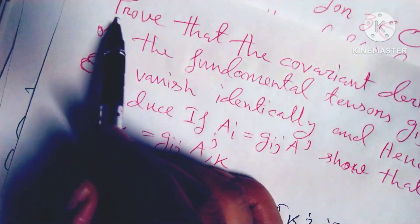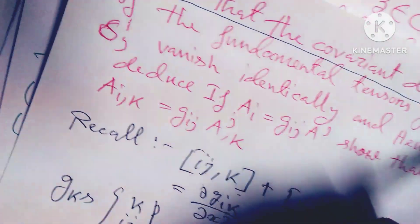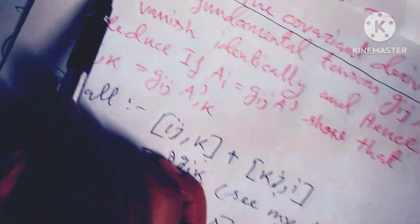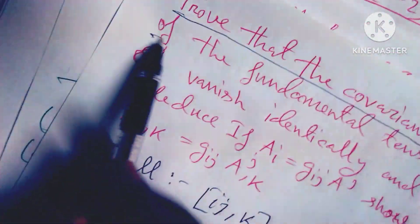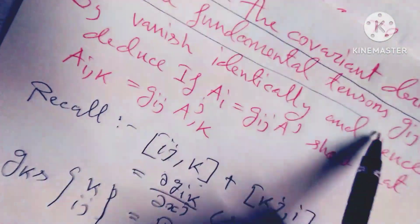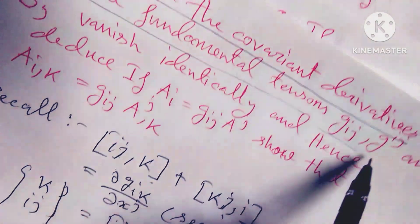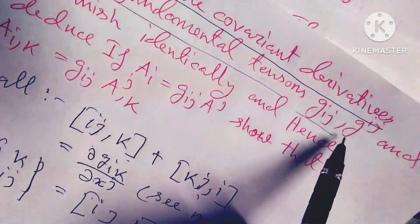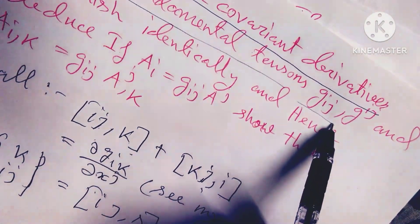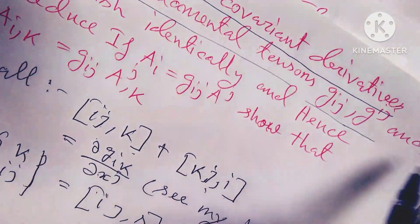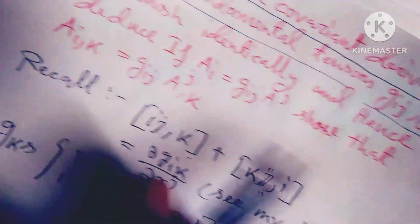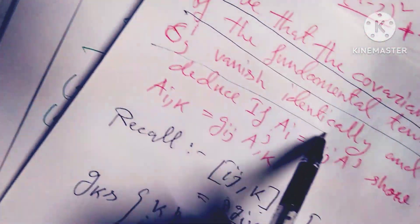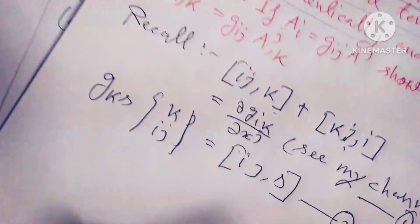Now, what is the question? We have to prove that the covariant derivative of the fundamental tensor g_ij, g^ij, and delta^i_j vanishes identically. So friends, let's start.